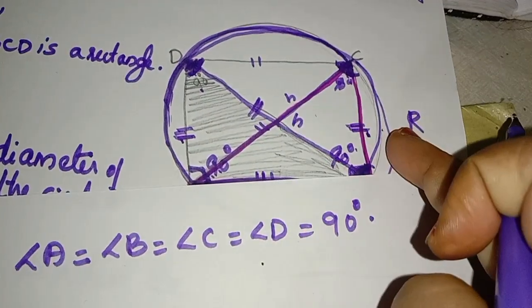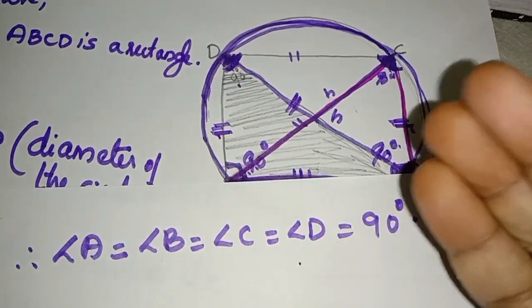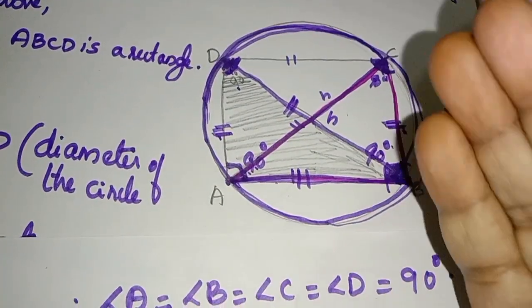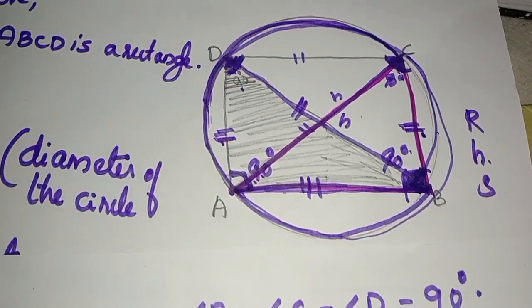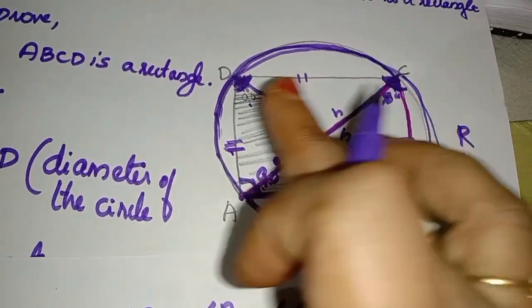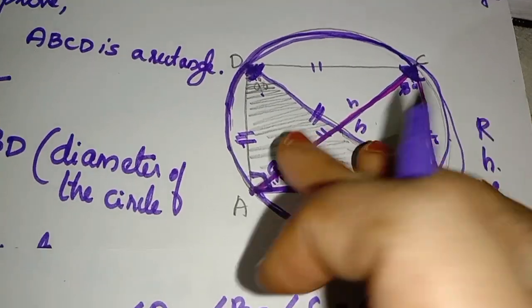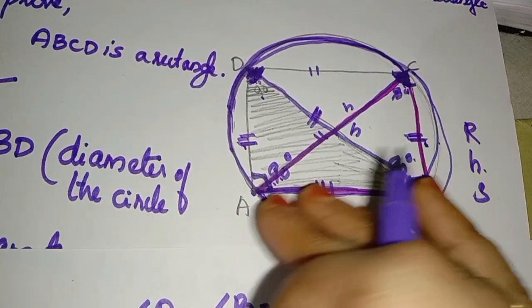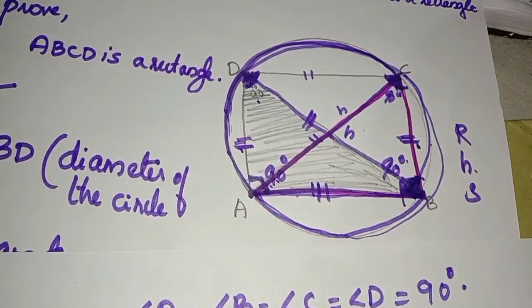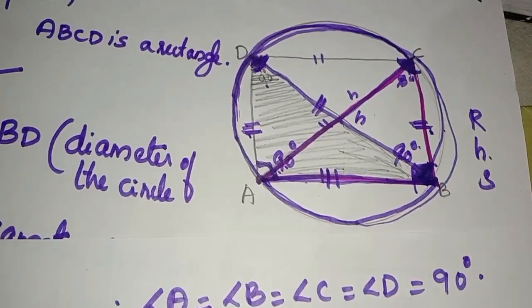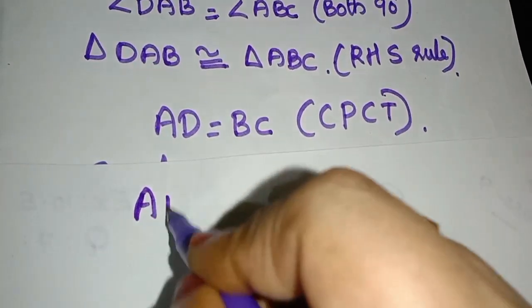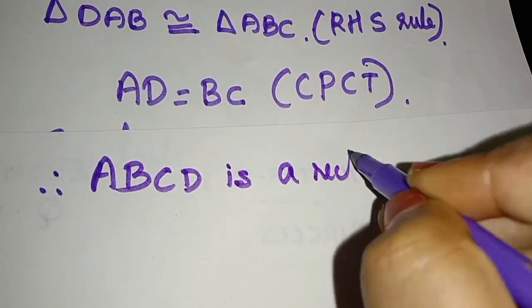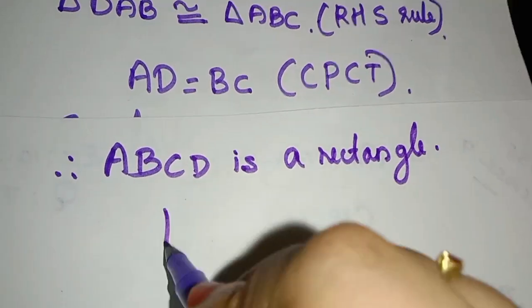The opposite side is equal. We have all angles equal to 90 degrees. Therefore, ABCD is a rectangle. Hence proved.